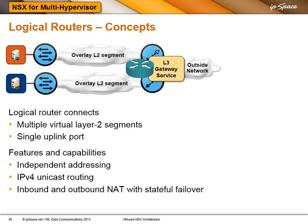Every logical router implements its own routing domain — it's like a VRF. It has its own independent addressing. At the moment it supports only IPv4 unicast routing, so no multicast or IPv6. And we have NAT with stateful failover between two gateway nodes, between the internal and the outside network.